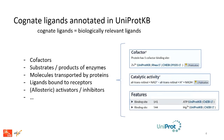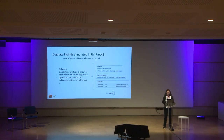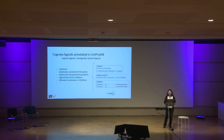We annotate ligand information in several fields in UniProtKB. We have a specific field for cofactors, another one that describes biochemical and transport reactions. And when we have information on the protein residues that interact with some ligands — mainly from 3D structural data — we annotate ligands with their binding sites.